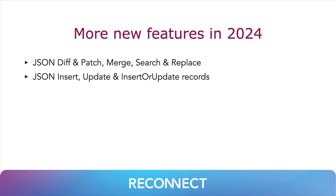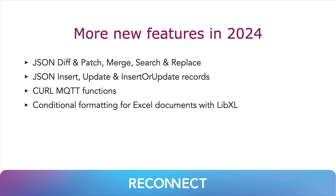If you have a record as JSON, you can directly create a record, update it, or let the plugin check which way to go. We have an example for using MQTT with our curl functions so you can try that. The XL functions for working with Excel files now include functions to do conditional formatting.